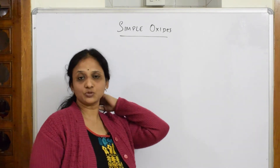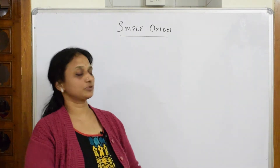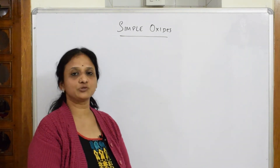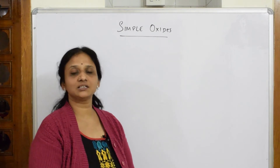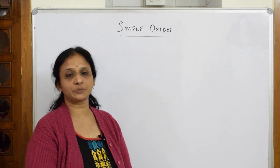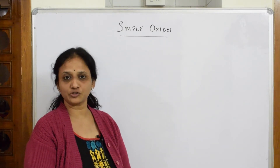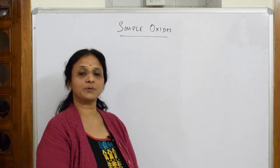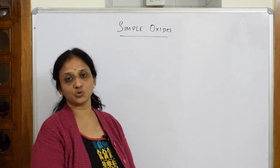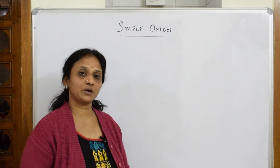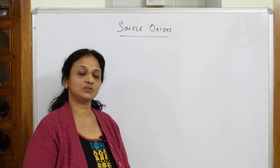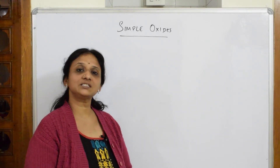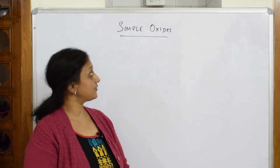Let us come back and do the next concept of group 16, that is the compounds of oxygen. We have already studied the preparation and chemical properties of oxygen. Then I taught you the compound of oxygen that is ozone — how to prepare it and its chemical properties. I have also done exam questions on ozone.